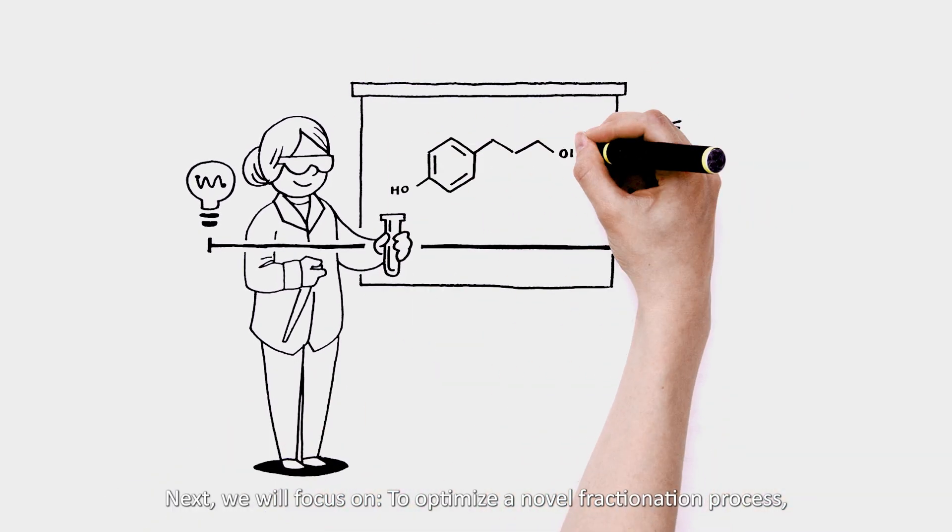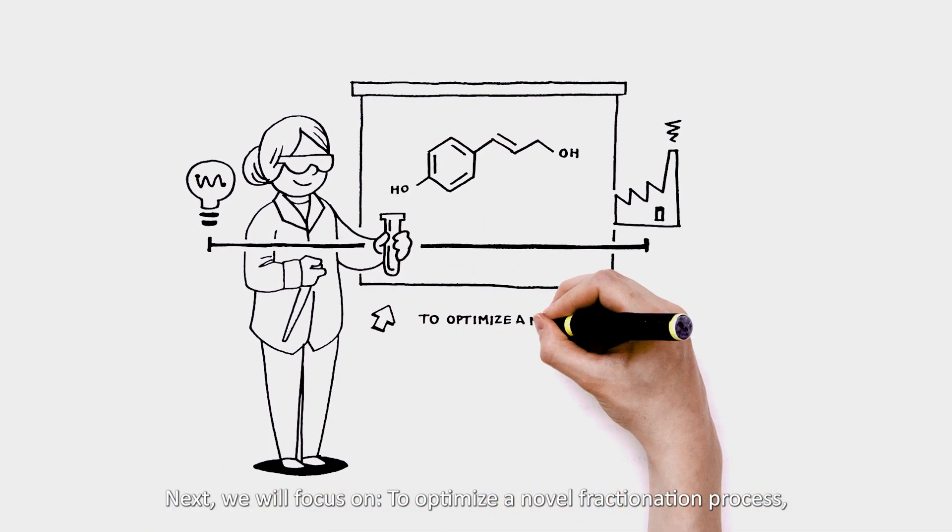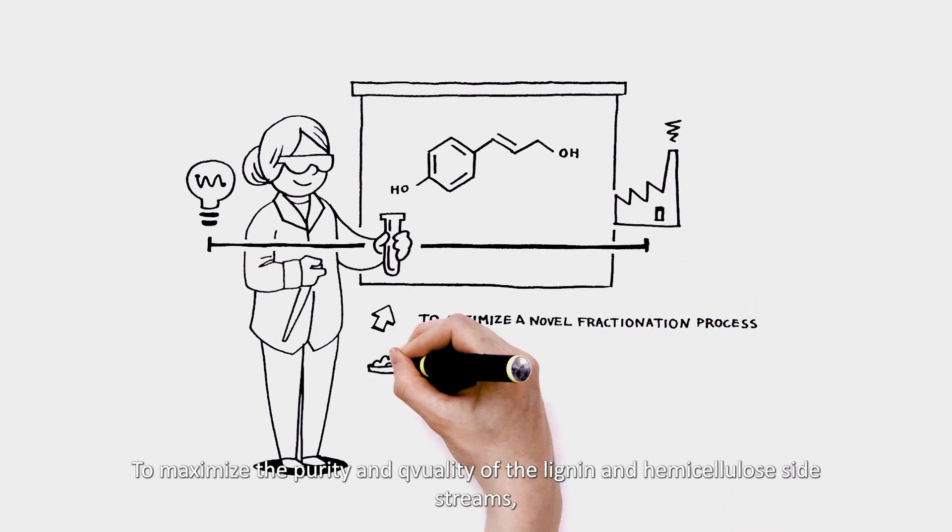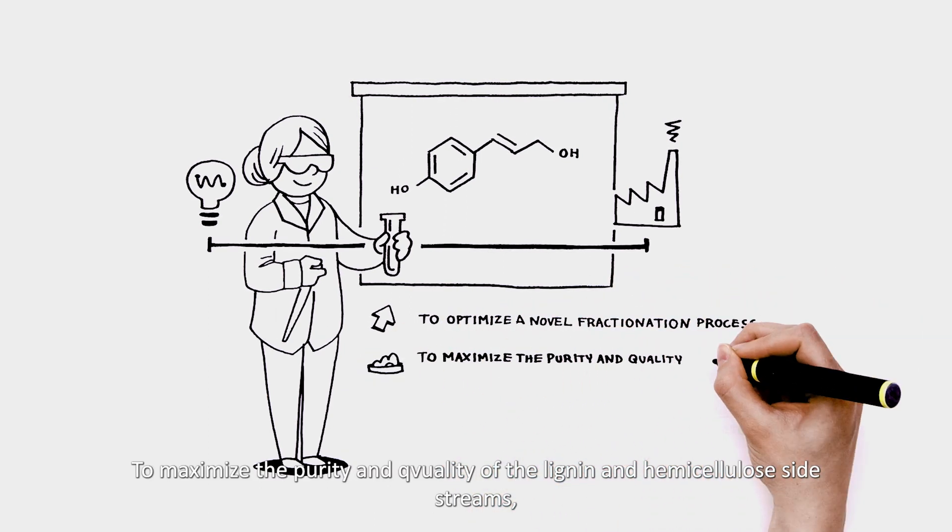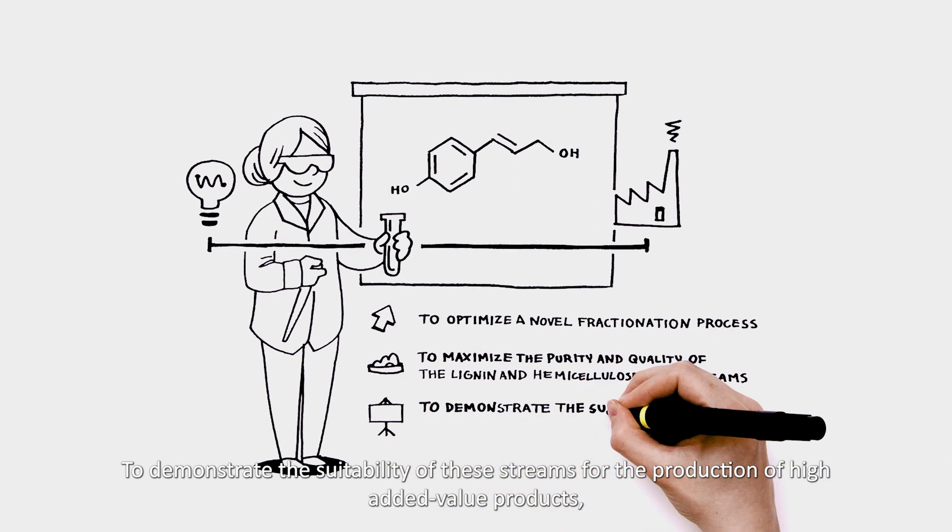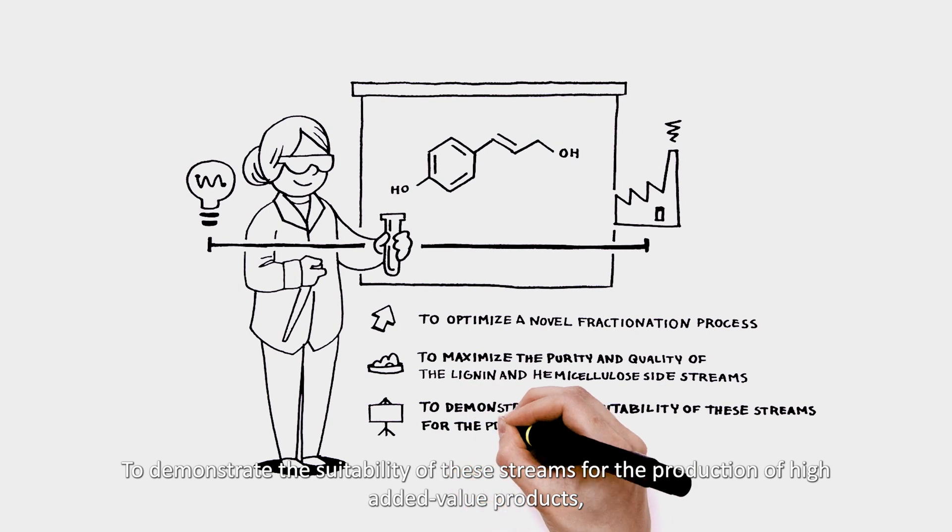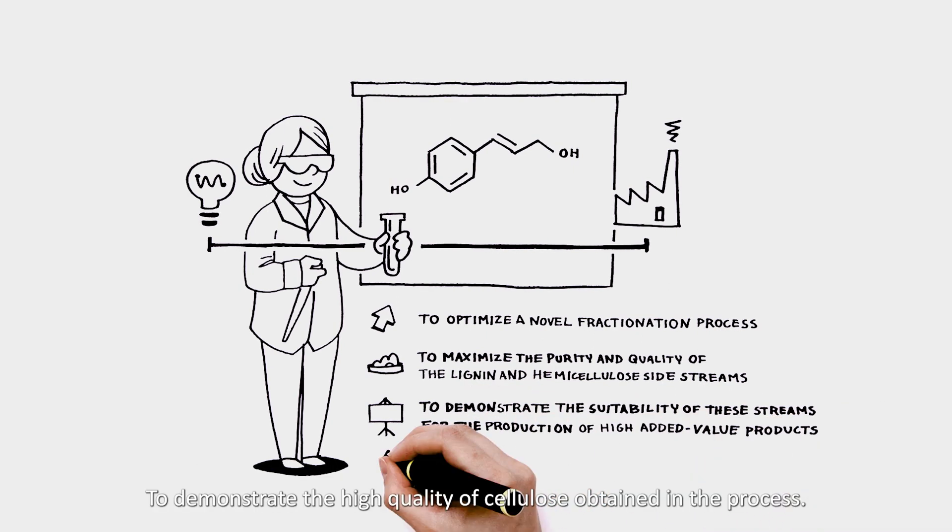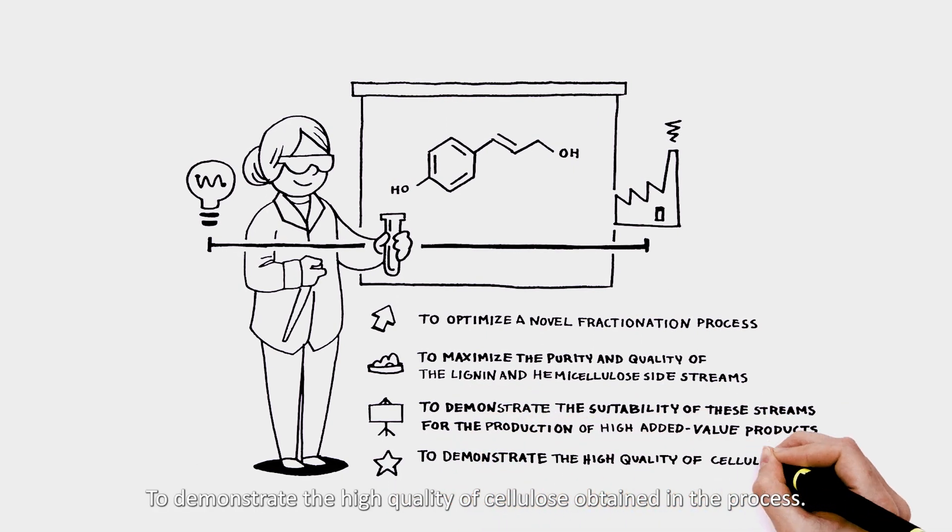Next, we will focus on optimizing a novel fractionation process to maximize the purity and quality of the lignin and hemicellulose side streams, to demonstrate the suitability of these streams for the production of high added-value products, and to demonstrate the high quality of cellulose obtained in the process.